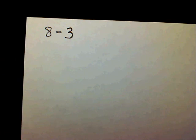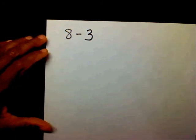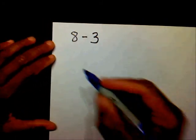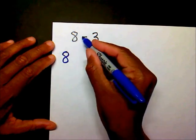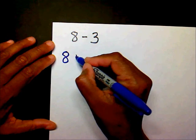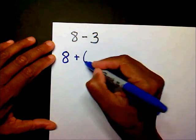This first problem, we have 8 minus 3. If we use the rule of adding the opposite, we'll bring our 8 down, we'll change our subtraction to plus, to addition, and the opposite of 3 is negative 3.